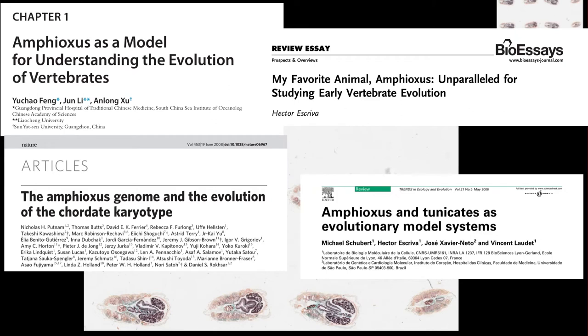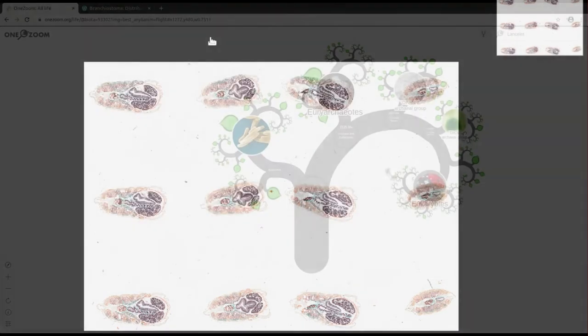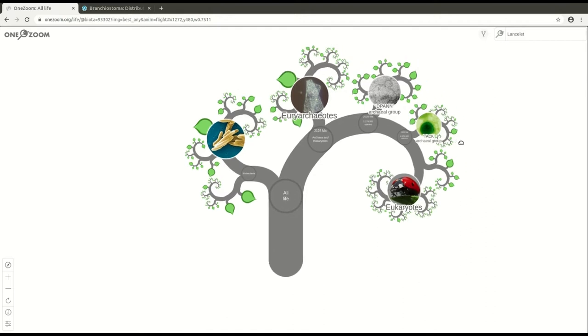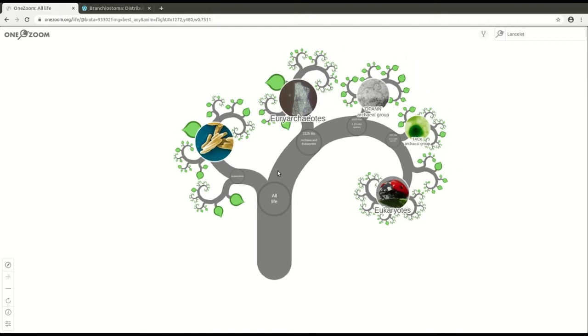One thing we can do is have a look at how lancelets fit in on the tree of life. So this is a website that I use quite often, and I thoroughly recommend it, called onezoom.org. And it provides an interactive zoomable tree of life, all the way from bacteria down to the eukaryotes down here on this tiny branch over here.